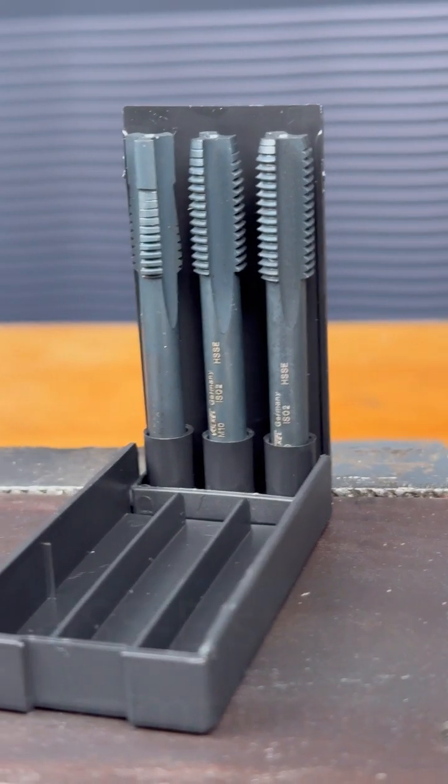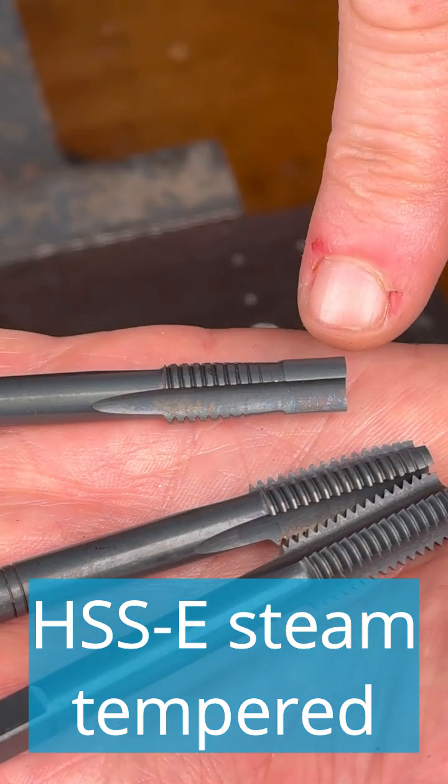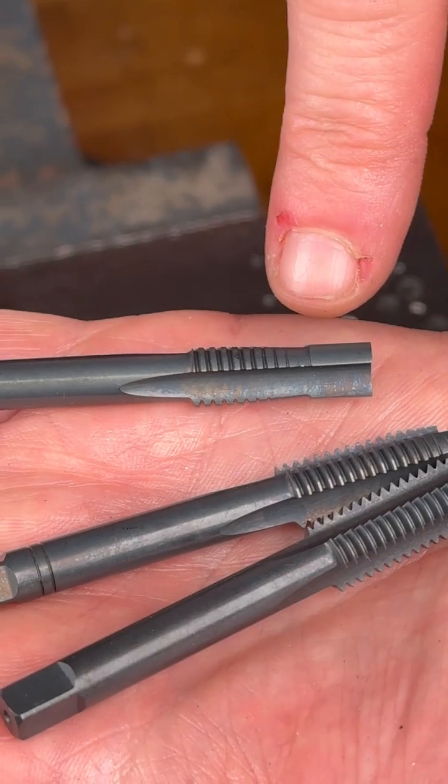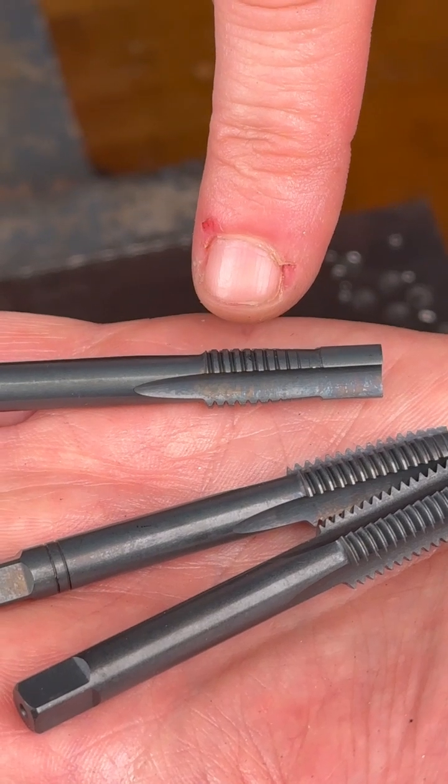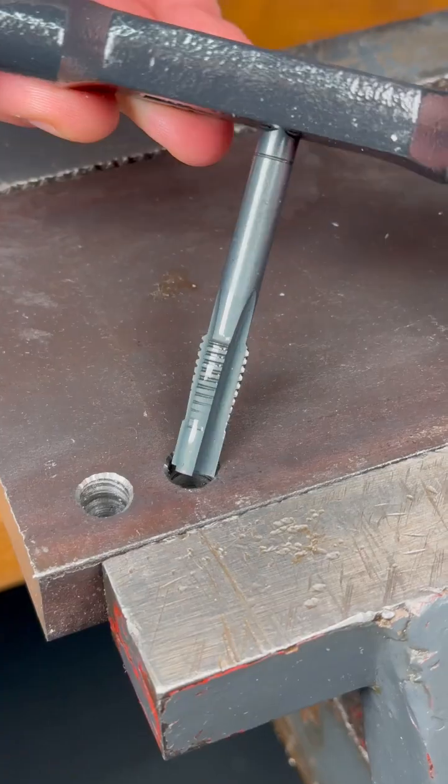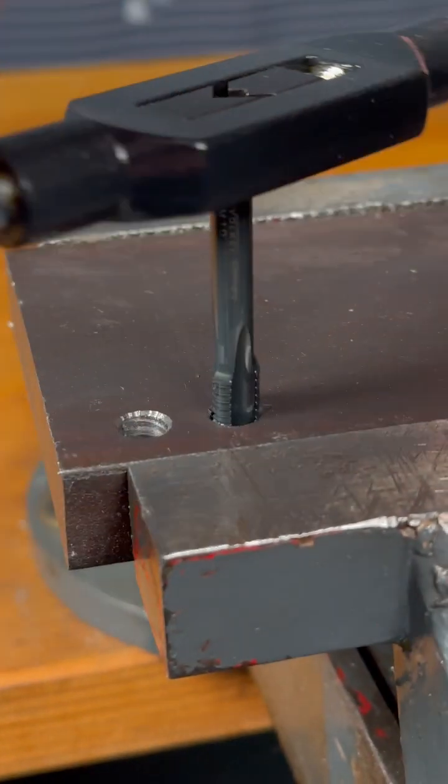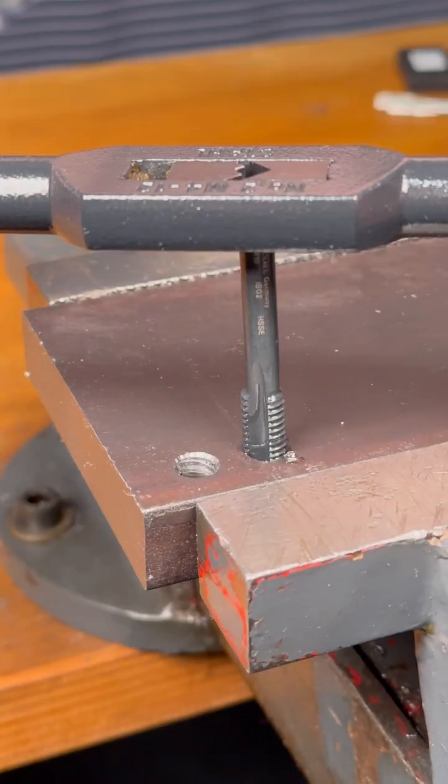For extremely demanding applications, our steam-tempered HSSE hand taps with a pilot on the rougher simplifies centric positioning in the core hole. These cut dimensionally accurate threads, even in wear-resistant and high-alloy steels with high strengths. Due to the additional steam treatment, the cutting oil adheres more effectively to the taps.